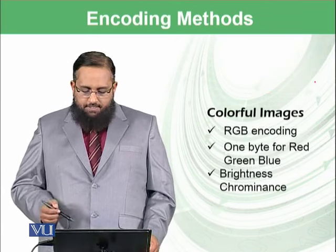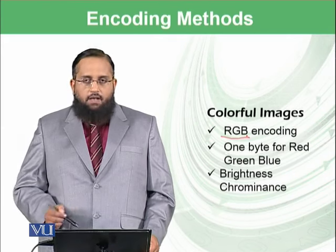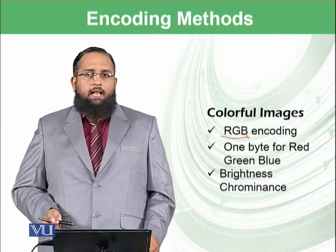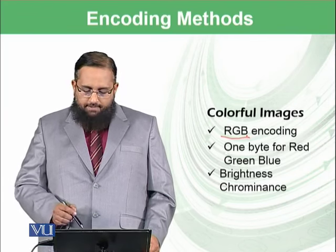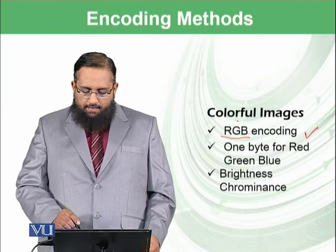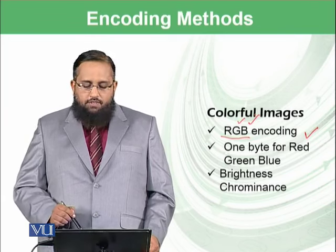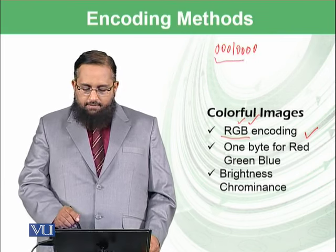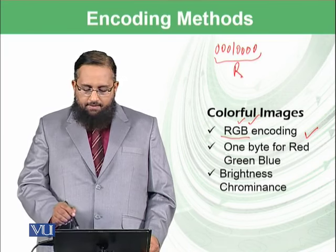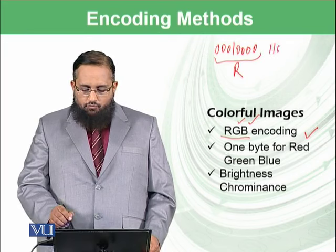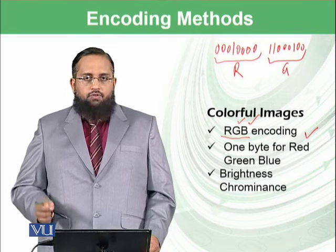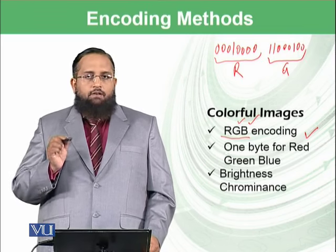To store colorful images, one technique we use is RGB — Red, Green, Blue. We form all the colors of the world using red, green, and blue. We allocate one byte for red, one byte for green, and one byte for blue, giving eight bits each. This combination of 24 bits represents one color, meaning each pixel's color is stored in 24 bits.